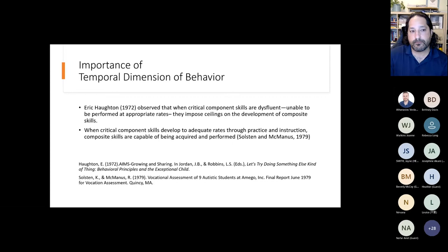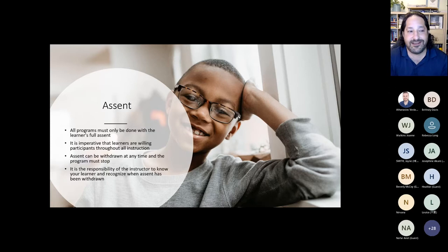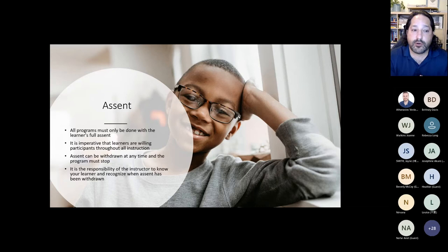It's really important to give you enough information to build a lens for viewing these things. Assent is a huge piece that must be taken into account. All programs must only be done with the learner's full assent — meaning they are willing participants throughout all instruction. They can withdraw it at any time, and when they do, the program must stop. It is the responsibility of the instructor to know your learner and recognize when assent has been withdrawn.